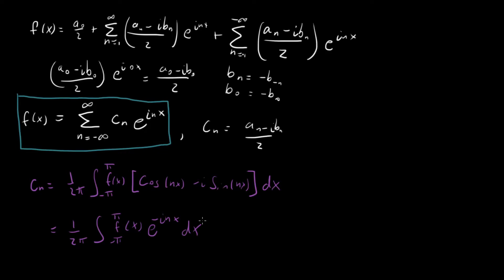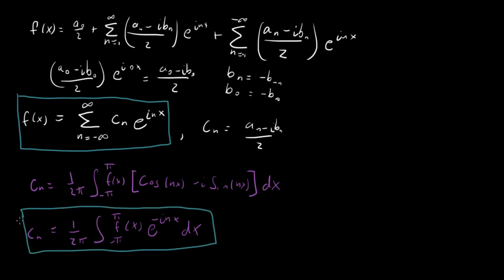So we've done it. We've taken our ordinary Fourier series in terms of sines and cosines and rewritten it using just one series with a complex exponential and these cₙ coefficients, which are given by a single integral of our function with e to the minus inx. I'll stop here, and in the next video I'll start going into some examples with this.